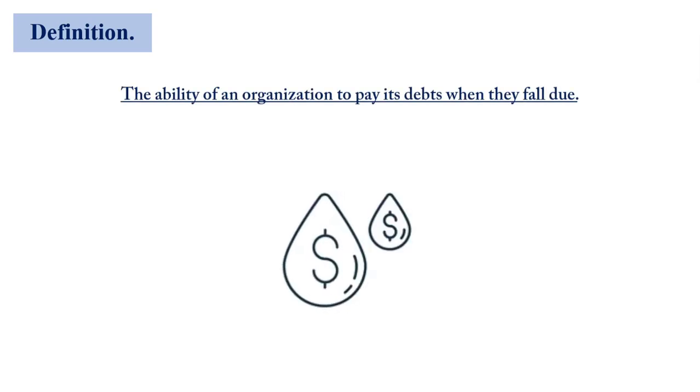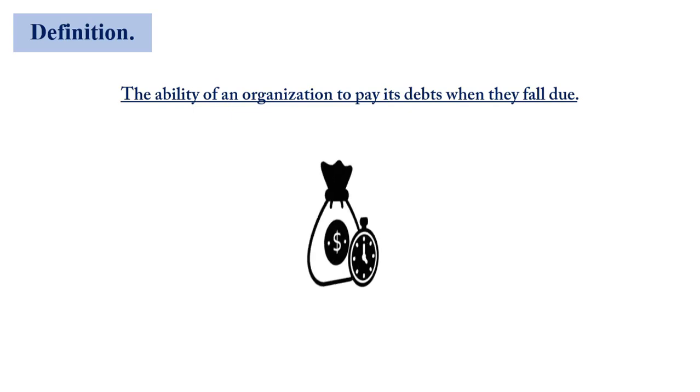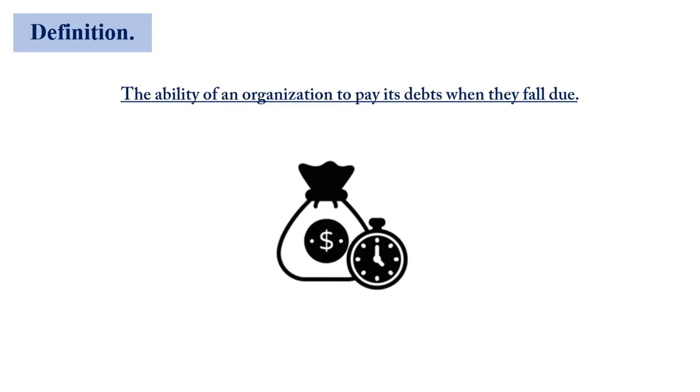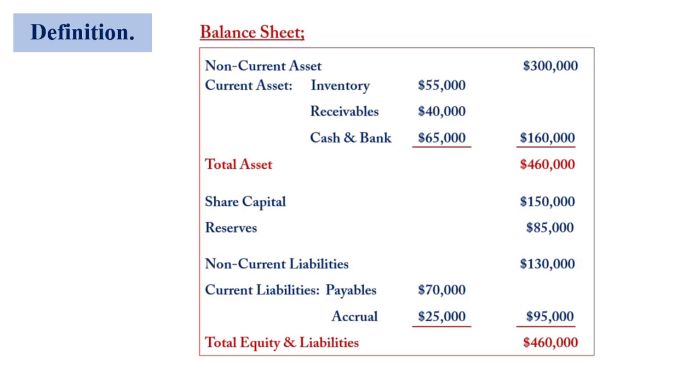So let's look at what liquidity means. This is the ability of a business to settle its short-term debt when they fall due, especially within a period of 12 months. When we talk about short-term debt, there are bills that are outstanding by the time the business wraps up its activity for the year. If you look at the balance sheet, the current liability section, anything that is found there is termed as short-term debt.